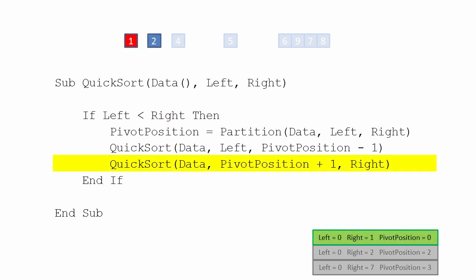But there is still work to be done. The previous invocation of quicksort finds itself at the top of the stack once again, and it can pick up from where it left off. There is a sublist to the right of the pivot position that this invocation was working with, which may need to be partitioned further. So this invocation of quicksort calls itself again, but this time pivot position plus 1 is passed in as the left pointer.